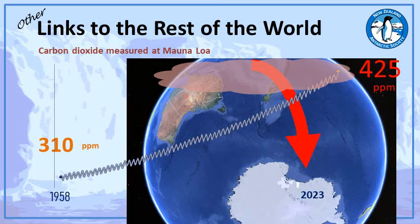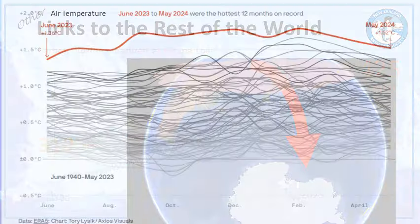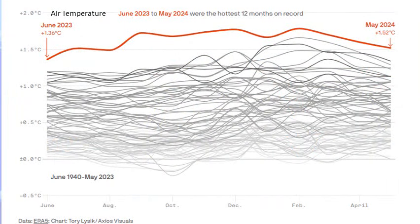We know the build-up of CO2 is creating warmer air in more temperate climates, and now that is shifting down to Antarctica. Looking at air temperatures for the last 12 months: we've had the 12 hottest months on record. The red line from June 2023 to May 2024 is quite a bit higher than the rest of the graph covering June 1940 to May 2023. In fact, 23rd July 2024 was the hottest day on record, and this record is likely to increase over the coming days and weeks.